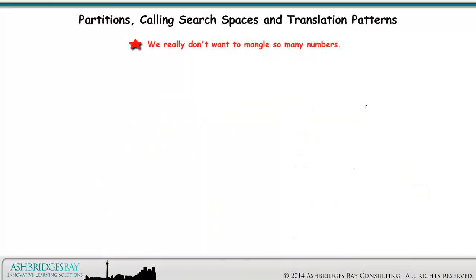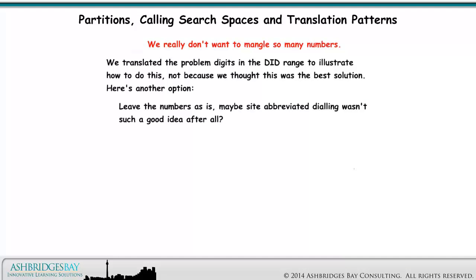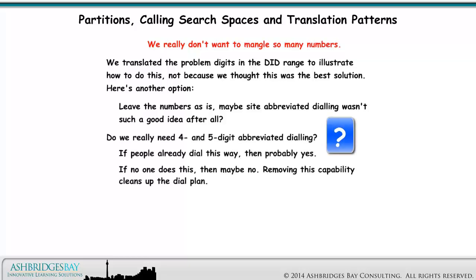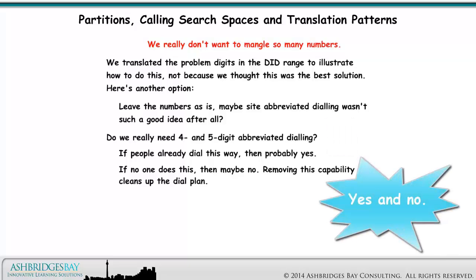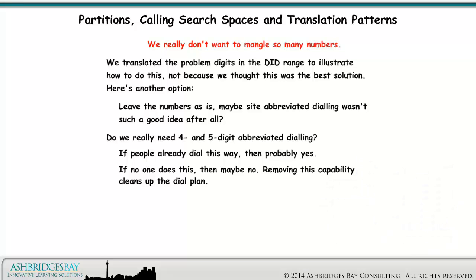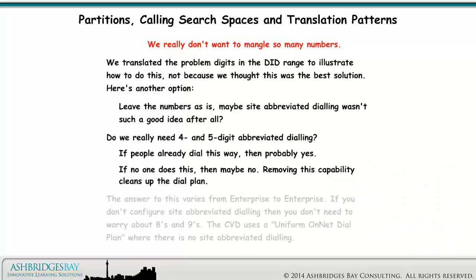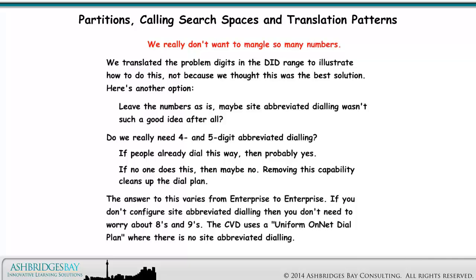We really don't want to mangle so many numbers. We translated the problem digits in the DID range to illustrate how to do this, not because we thought this was the best solution. Here's another option: leave the numbers as is — maybe site abbreviated dialing wasn't such a good idea after all. Do we really need 4 and 5 digit abbreviated dialing? If people already dial this way, then probably yes. If no one does this, then probably no. The answer varies from enterprise to enterprise. If you don't configure site abbreviated dialing, then you don't need to worry about 8s and 9s.